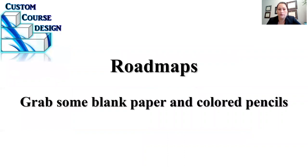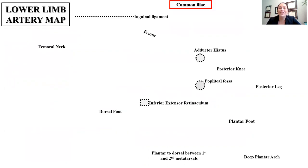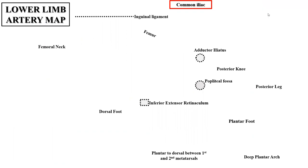We're going to get started on our lower extremity review. These are our roadmaps. If you grab some blank paper and some colored pencils, it really helps to draw this out — it helps solidify it in your mind through muscle memory. We're going to start with the arterial flow to the lower extremity, beginning at the common iliac artery before it divides into the external and the internal. We'll talk about three branches of the internal, then leave that part for the pelvis review.